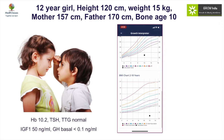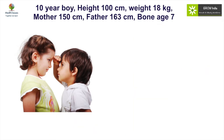A possibility of IgA deficiency, which could explain the situation in terms of celiac disease and a false-negative TTG, was considered. This is how the growth interpreter can really make a difference in evaluation. Similarly, a 10-year-old boy with a height of 100 and weight of 18 had a TTG of 32, and a diagnosis of celiac disease was considered even without a biopsy, but there was no effect of a gluten-free diet.